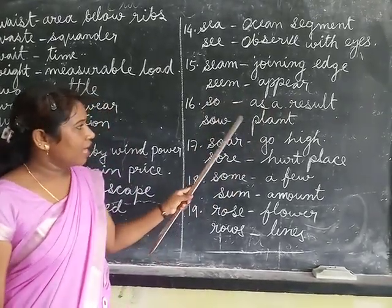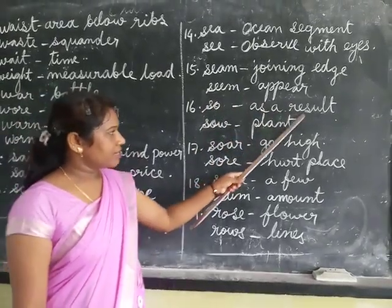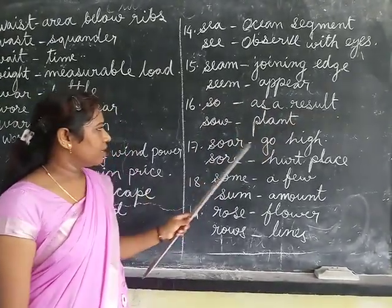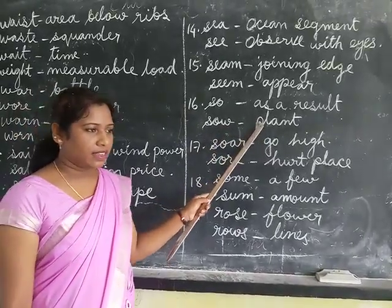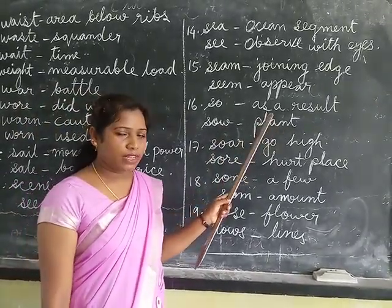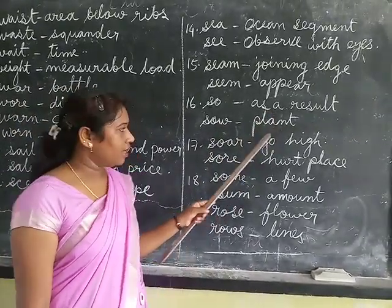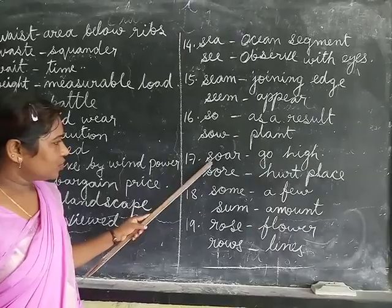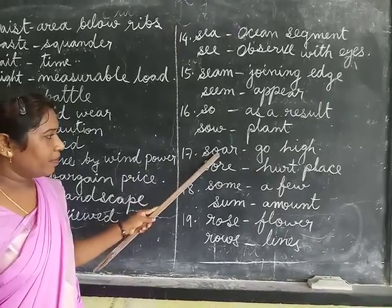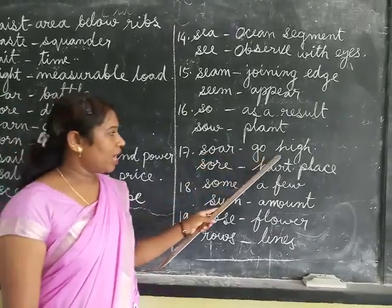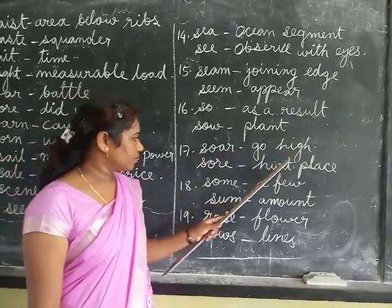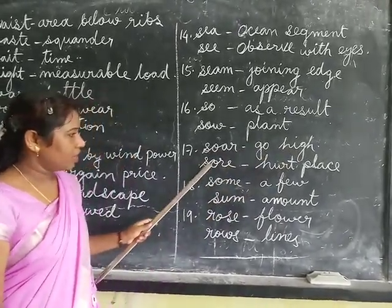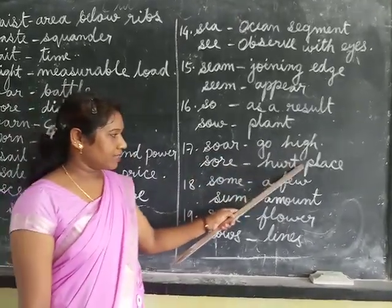So — so means as a result. Sow — sow means to plant, as in we sow some seeds in the soil. S-O-A-R, soar — soar means to go high. Sore — sore means a hurt place.